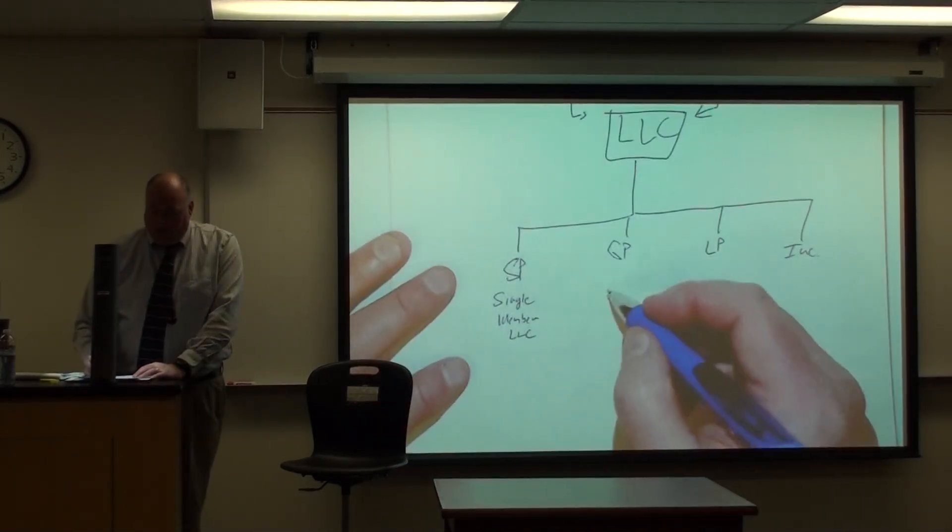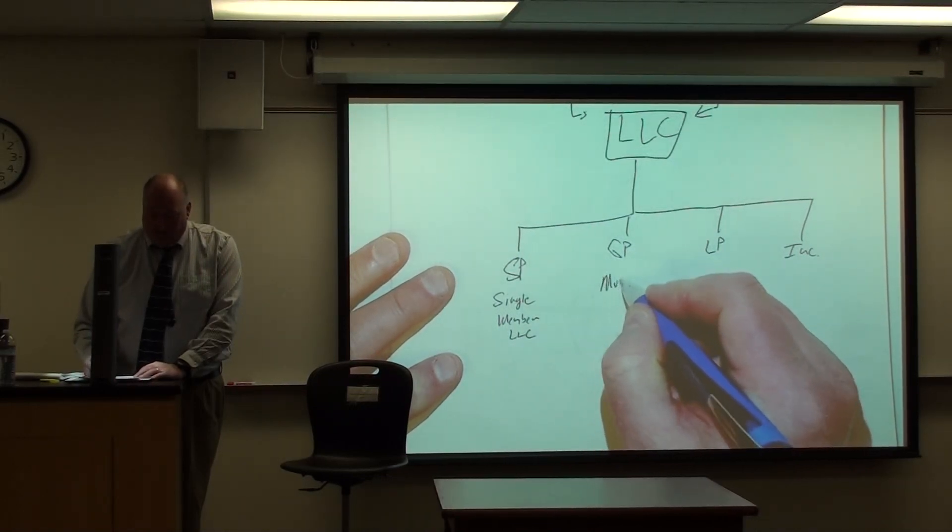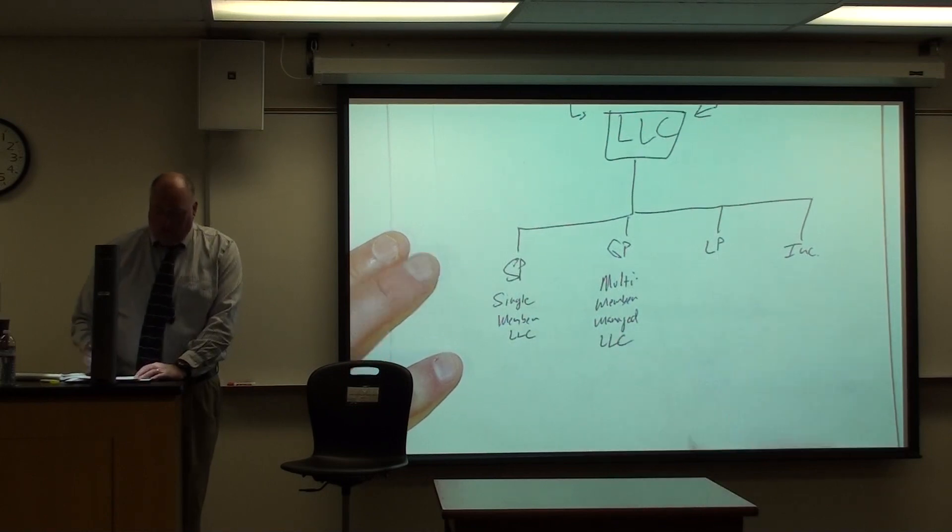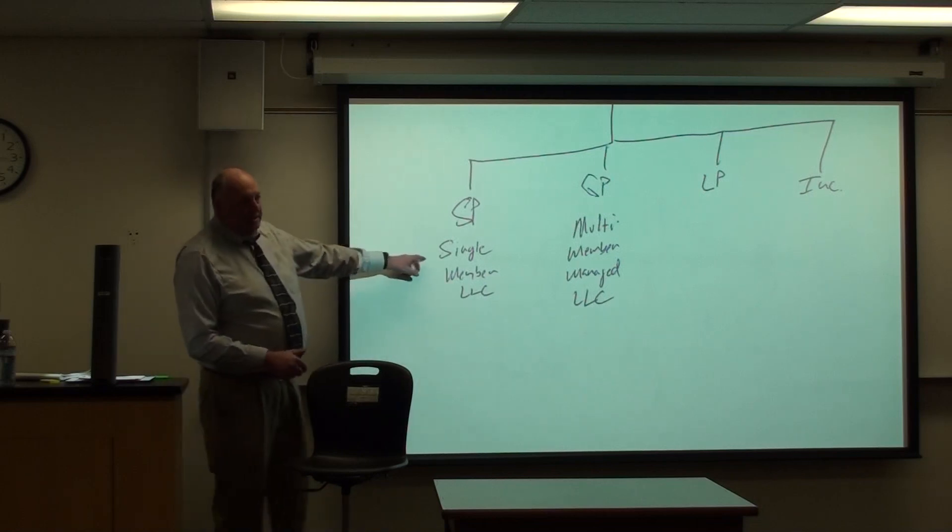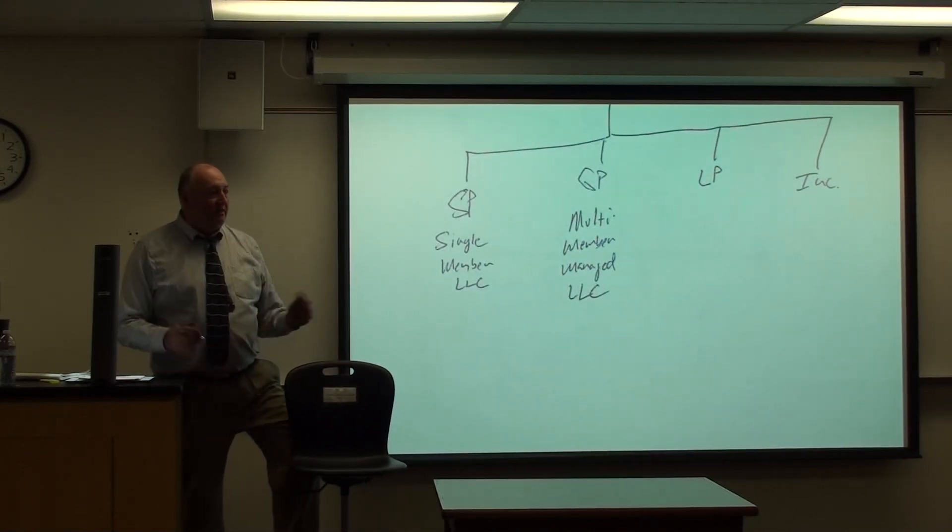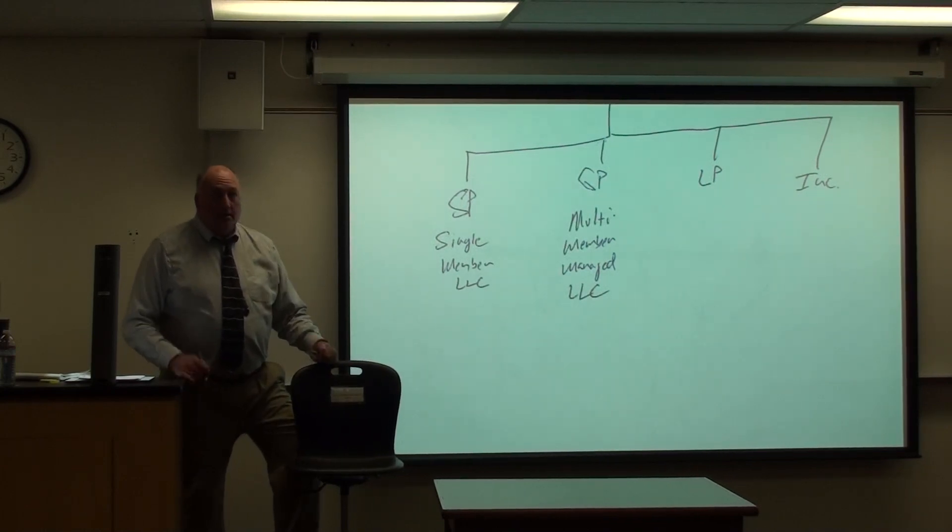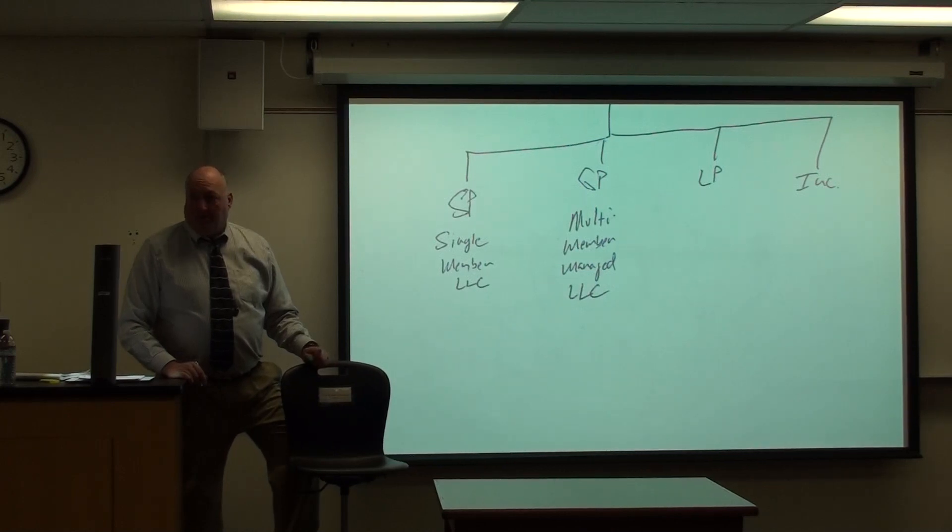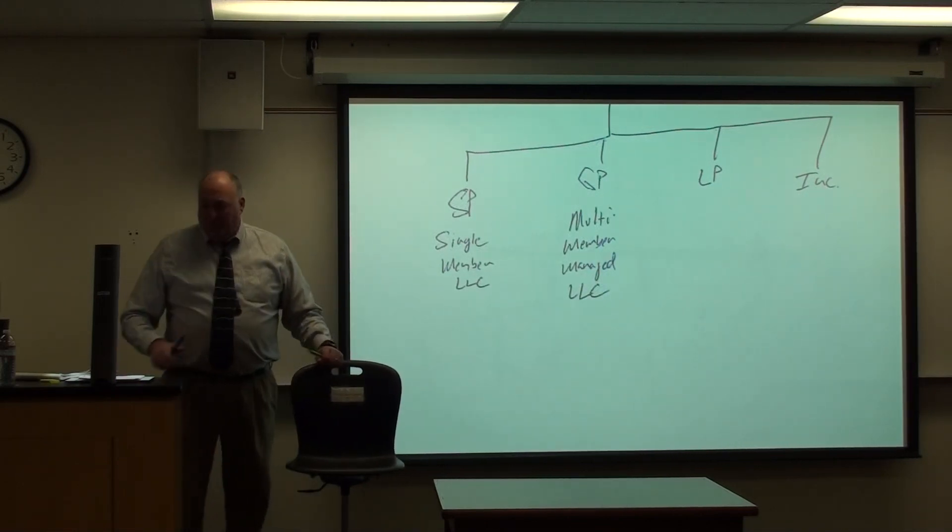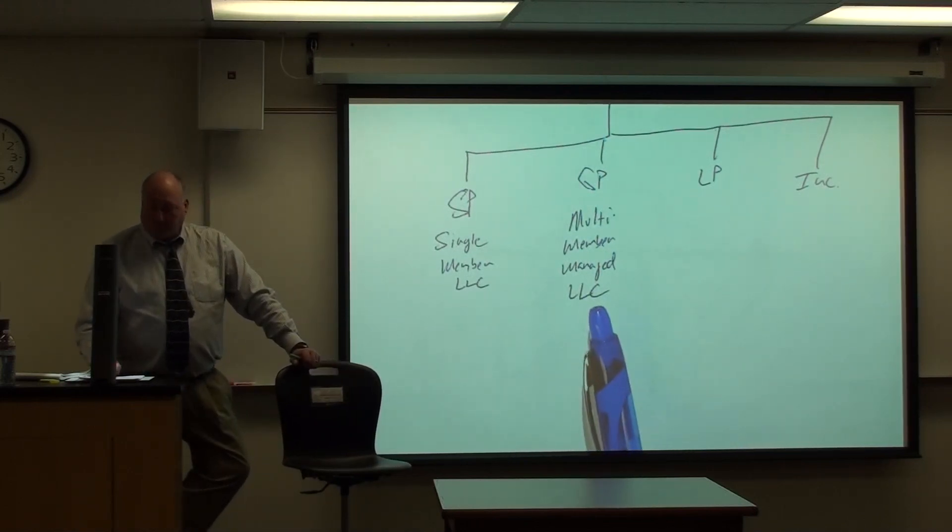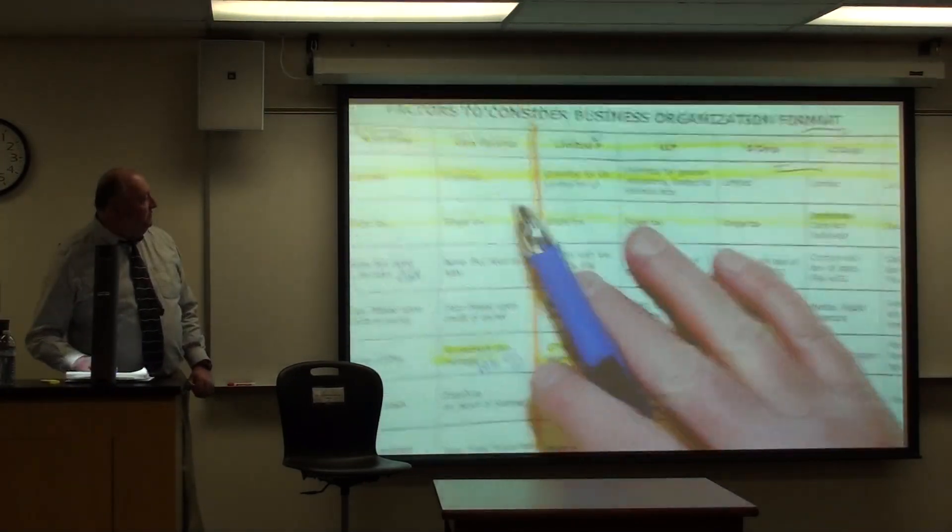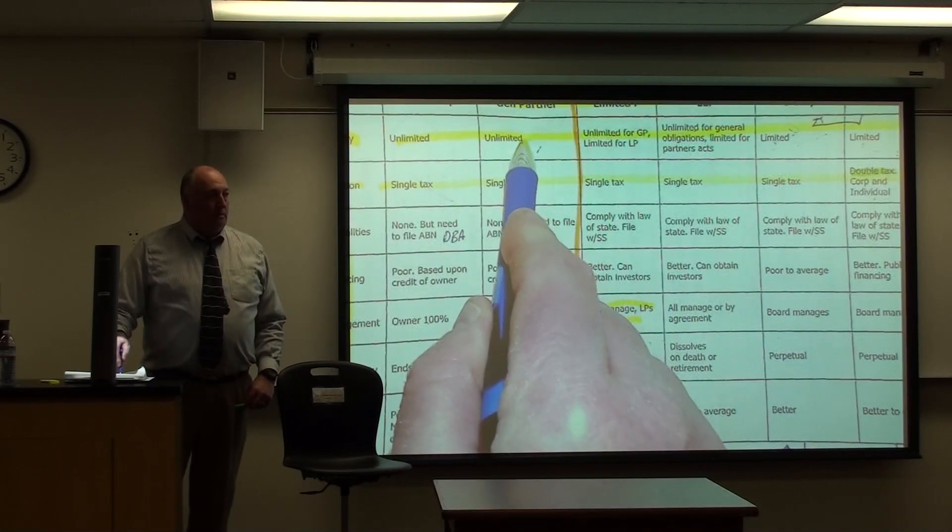The general partnership model. The general partnership model is two or more people that are members. So, we call this a multi-member managed LLC. And don't worry, I'm not going to test you on these different names, okay? So, this is the general partnership model. Now, again, the good thing about a general partnership is everybody gets to vote. The management authority. You get your percentage of profit based upon your ownership level. It's not taxed. It's double taxed. And there's a lot of benefit to it. So, very common. Very common for two or more people. Instead of being a general partnership, you'll be a member managed LLC. You vote your percentage. But you do have now liability protection. So, basically, you're a general partnership. Only you have limited liability. And everything else kind of is the same.